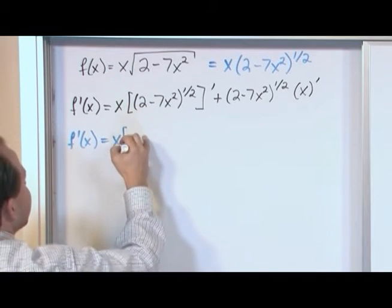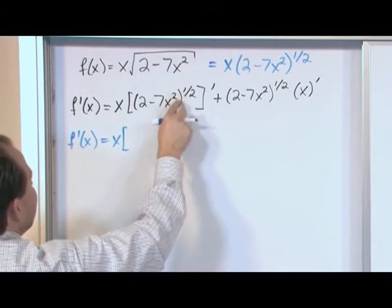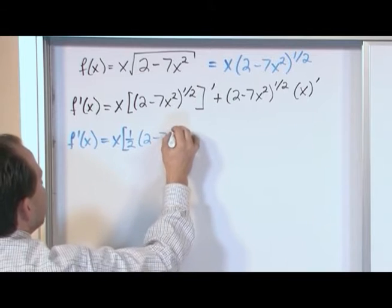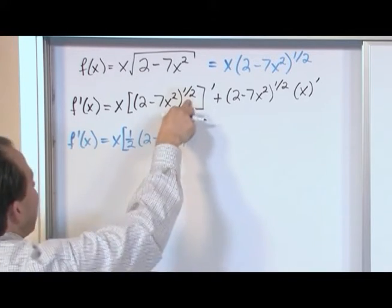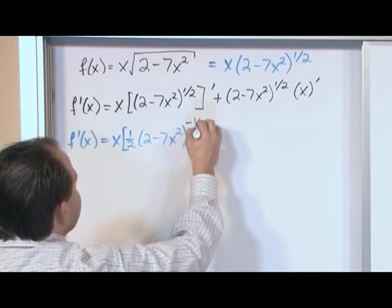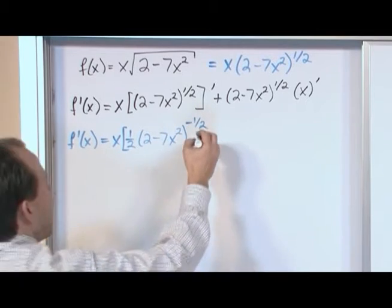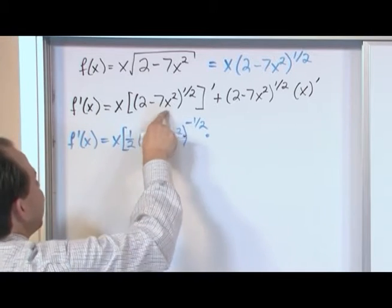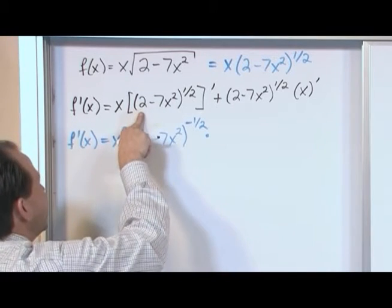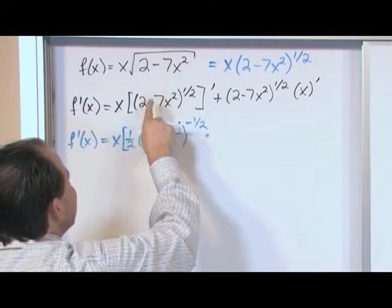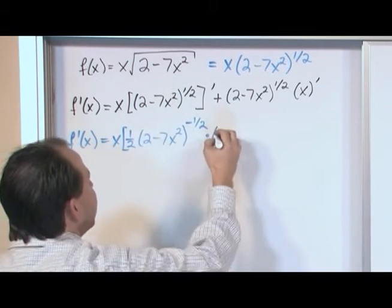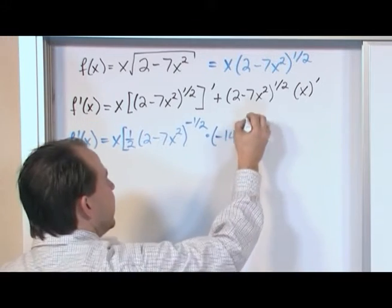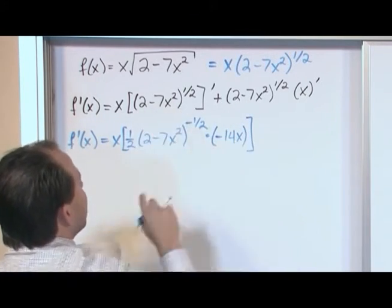When we're here, we have this nested function going on, so we have to use the chain rule. The outer function is this exponent, so you'll have 1/2. The inner guy is going to stay the same, just like we've been doing in the other problems. We subtract one off the exponent, and we're going to get negative 1/2. But we can't stop there because we have to multiply by the derivative of the inside. The derivative of 2 is 0. The derivative of this, 2 times 7 is 14, we have a negative, so it's negative 14x.